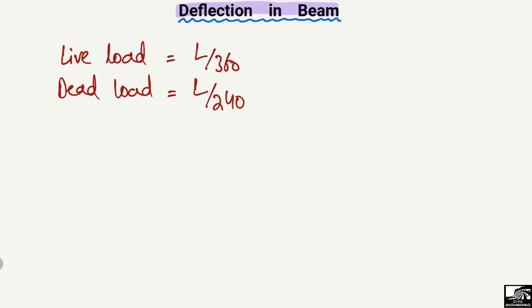These limits — L/360 and L/240 — are specified by ACI 318-14. These are the standard guidelines provided by the American Concrete Institute. Similarly, in other codes such as Euro codes, you can also find live load and dead load deflection limits.